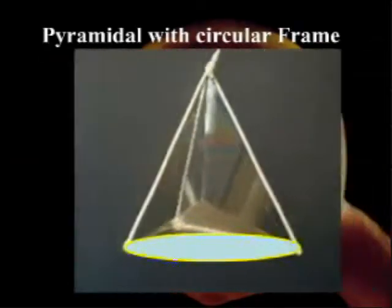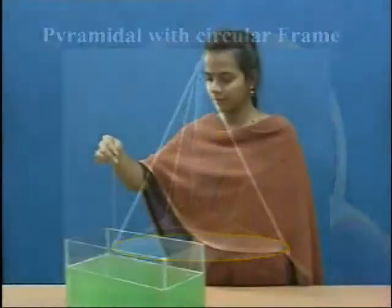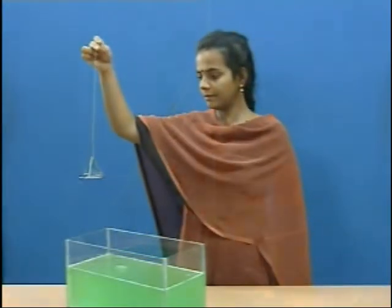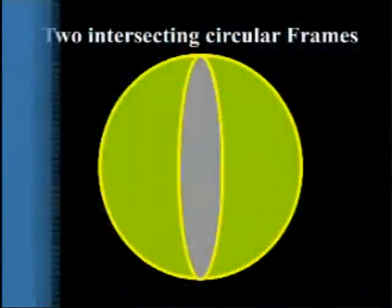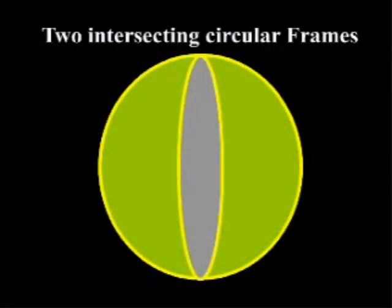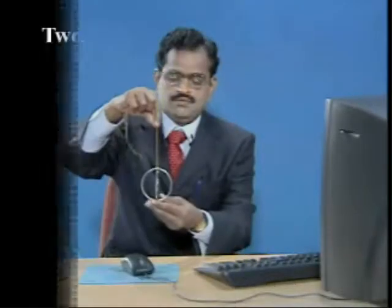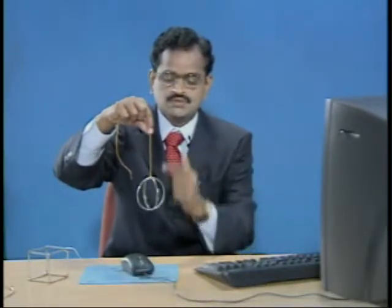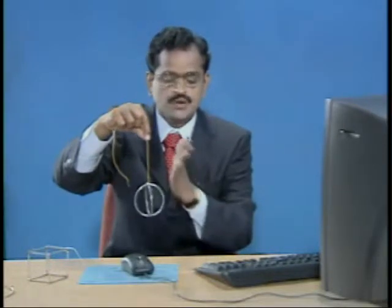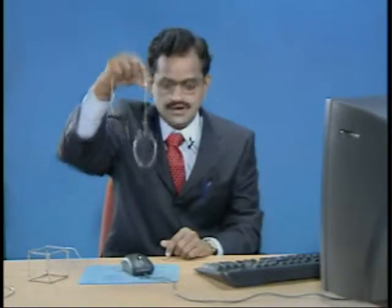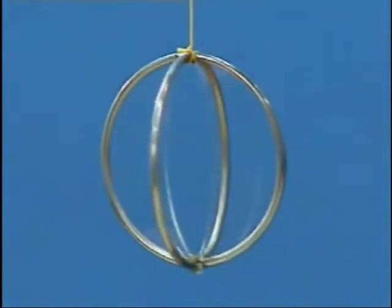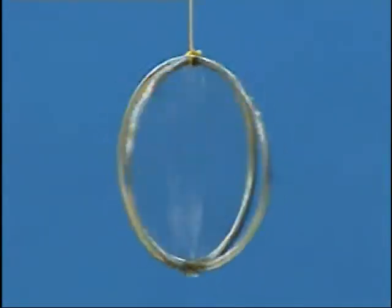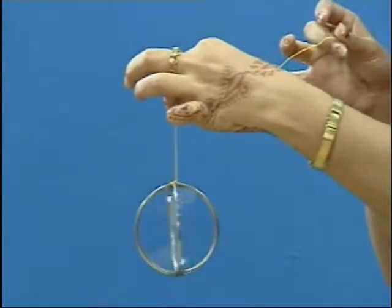Here is another example: a pyramidal frame with a circular base. Then, you take two intersecting circular frames — one surface perpendicular to another. Two circular frames are perpendicular to each other. If you dip this in soap solution, the shape will be like this. A very interesting figure will be formed in the middle.